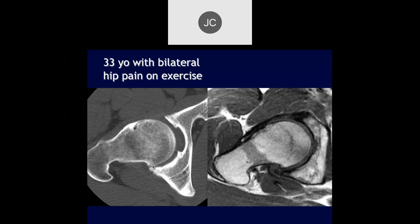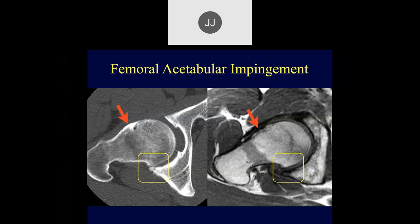We can also see abnormality posteriorly and inferiorly — cartilage narrowing, irregularity of subchondral bone, and marginal osteophytes. This is the typical appearance of pincer-type impingement. Most of these patients end up with a mixed form of both cam type, seen anteriorly, and pincer type. This is very characteristic appearance of FAI.